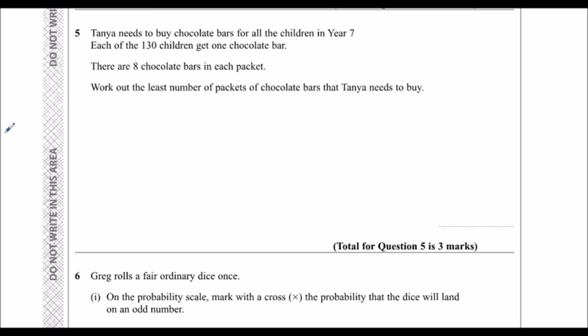Question 5: Tanya needs to buy chocolate bars for all the children in year 7. Each of the 130 children gets one chocolate bar. There are 8 chocolate bars in each packet. Work out the least number of packets of chocolate bars that Tanya needs to buy. So we've got 130 children getting one chocolate bar each, and there are 8 bars in a packet. So we need to know how many 8s go into 130.